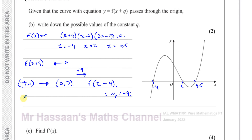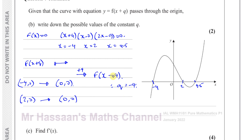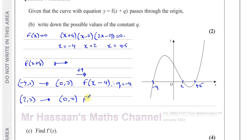Now looking at the point (2, 0): for that to become (0,0) it has to move two spaces to the left. When it's positive inside the function, the curve moves to the left by that number of spaces. So that gives f(x+2), meaning q could also equal 2.